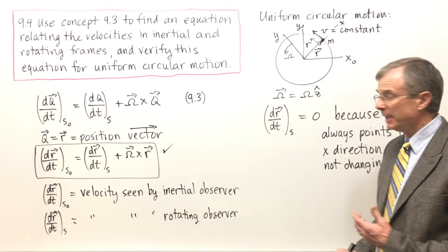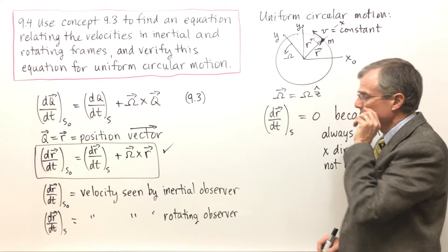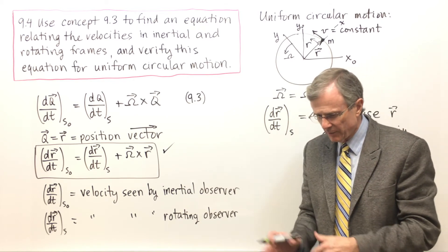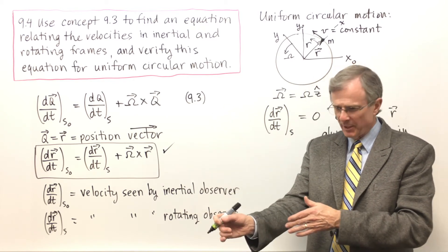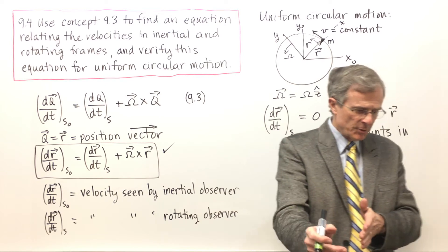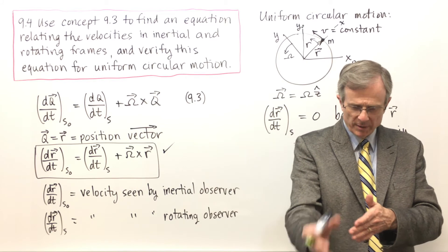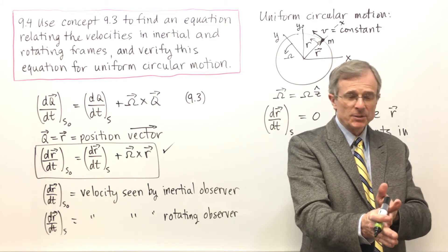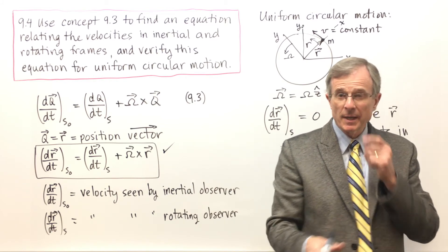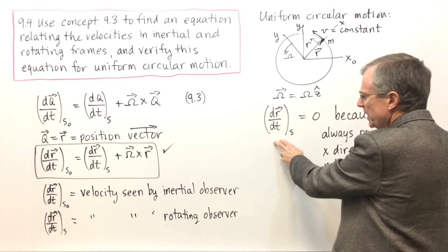For the rotating observer, this would be like you on a merry-go-round and you're watching one of the bars of the merry-go-round. From your perspective as you go on this merry-go-round, this bar that comes down isn't moving, it's still in your line of sight at all times. That's why dR/dt is zero.